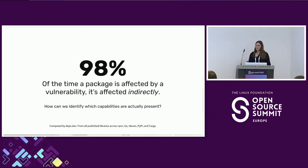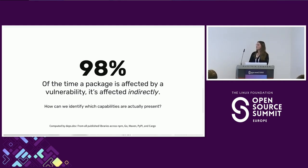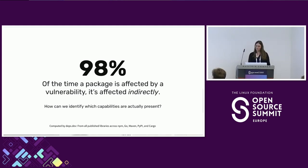98% of the time when a package is affected by a vulnerability, it's affected indirectly. So when we're looking at what capabilities are present in code, we can assume that many of the capabilities present aren't direct — they're actually via indirect dependencies. These are often intended, expected behavior: you're using networking libraries, so now you have network access in some way.